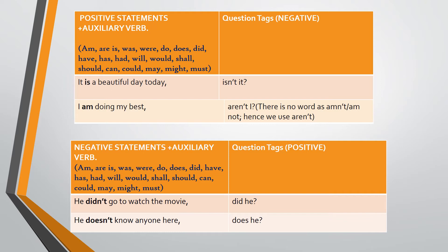Let's look at a couple of negative statements that have the auxiliary verb. Since these are negative statements, the question tag needs to be in the positive. 'He didn't go to watch the movie, did he?' 'He doesn't know anyone here, does he?'